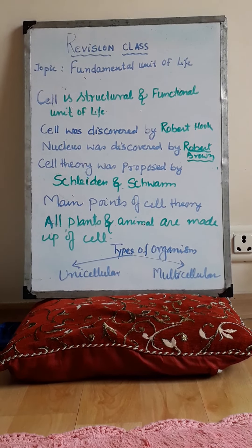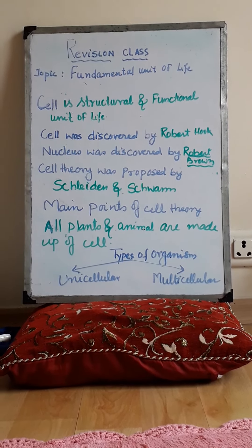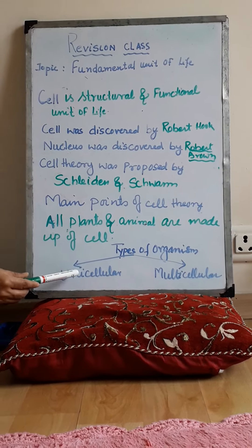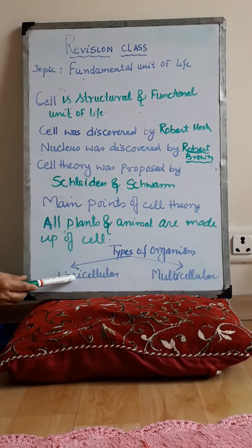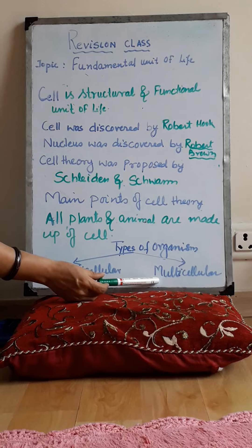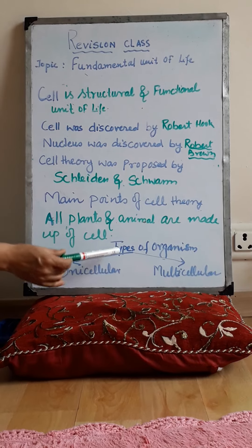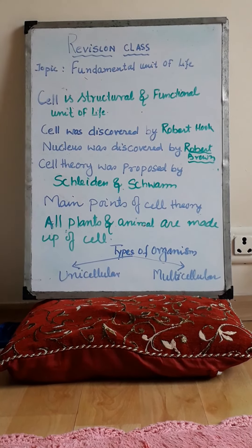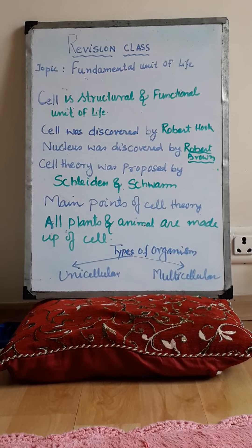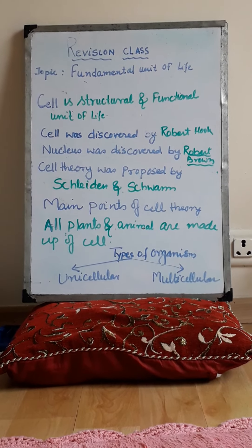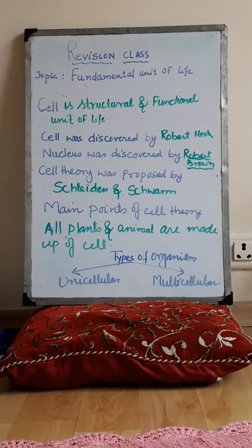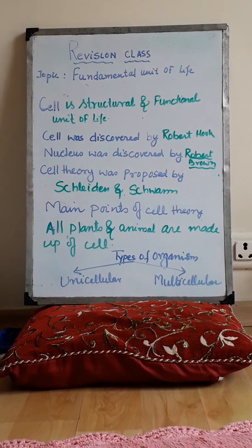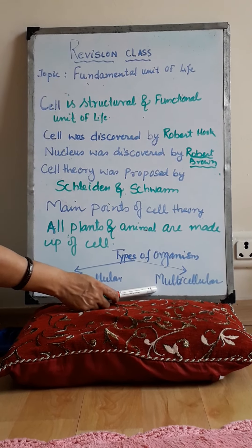On the basis of the number of cells, we can classify organisms into unicellular and multicellular. Organisms which are made up of only one cell are called unicellular organisms, and organisms which are made up of many cells are called multicellular organisms.